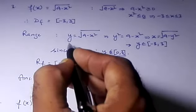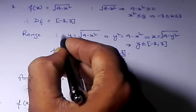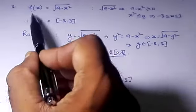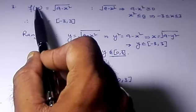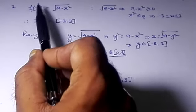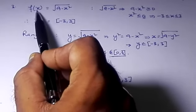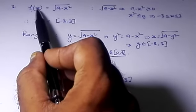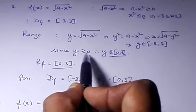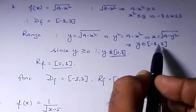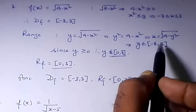Why is the range [0, 3]? Because we know that y is always positive or zero, since it comes from a square root. So y starts at 0 and goes up to 3. Therefore the range of this function is [0, 3].